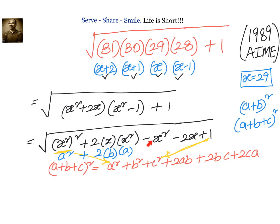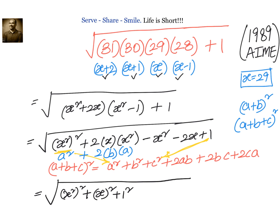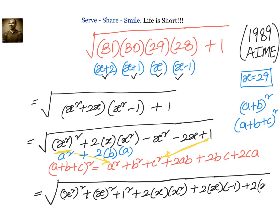But we have a negative x² here, while the formula always gives plus x². So we rewrite minus x² as plus x² minus 2x². This adjustment makes the entire expression a perfect square, so the square root cancels out and we get x²+x−1.